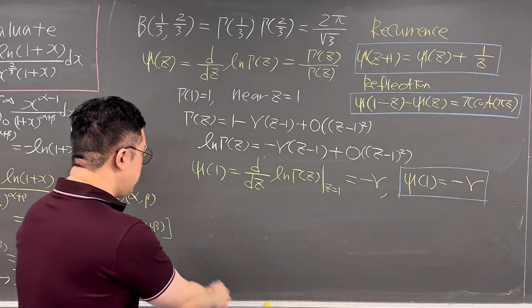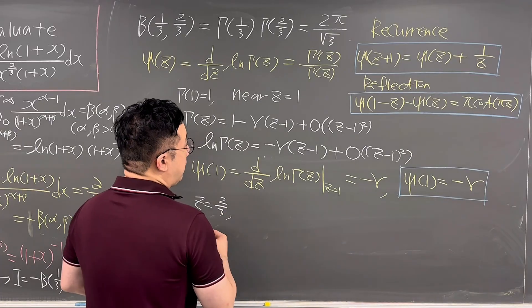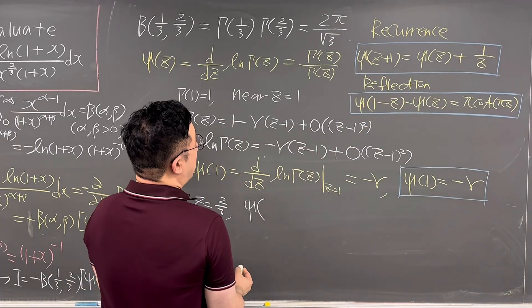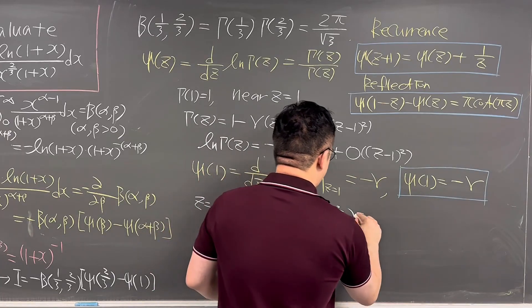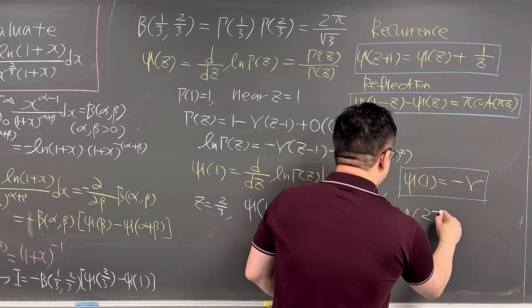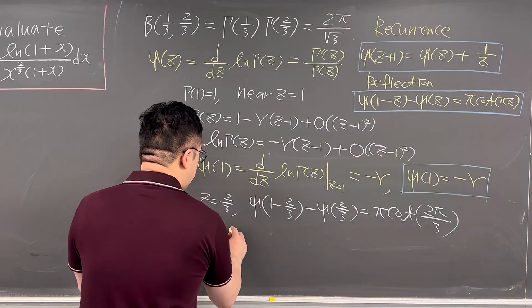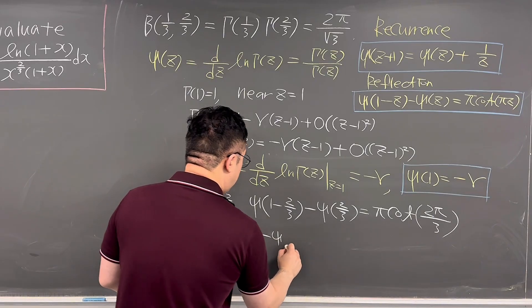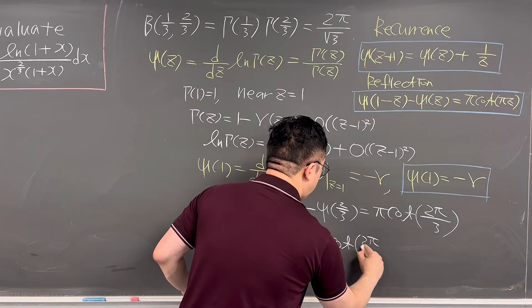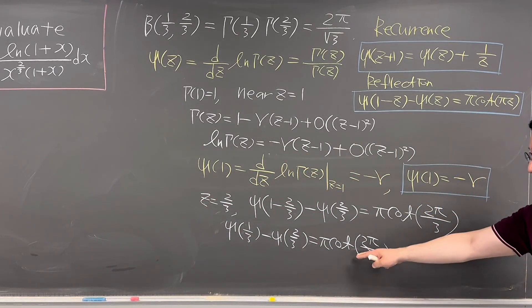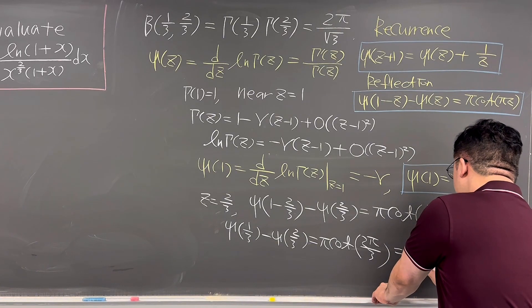Using the reflection formula with z = 2/3: ψ(1 − 2/3) − ψ(2/3) = π · cot(2π/3). So ψ(1/3) − ψ(2/3) = π · cot(2π/3). Since cot(2π/3) = −1/√3, this gives ψ(1/3) − ψ(2/3) = −π/√3.